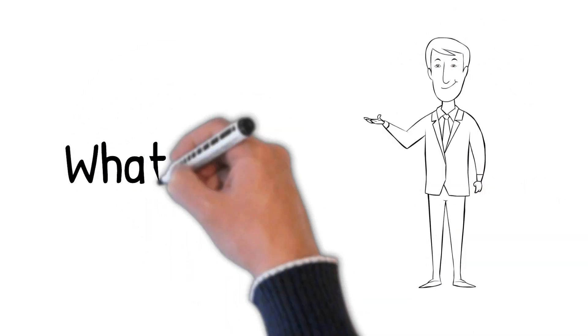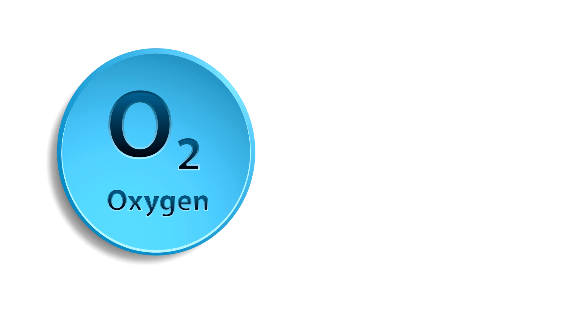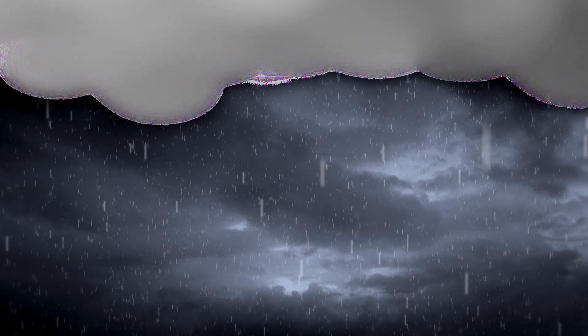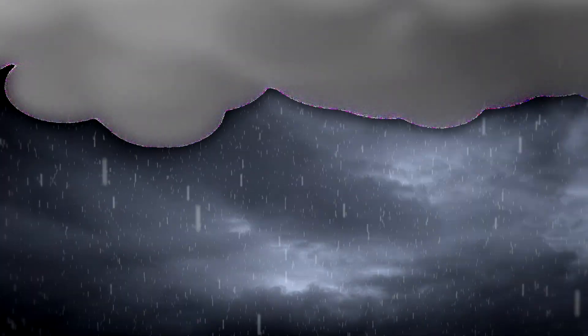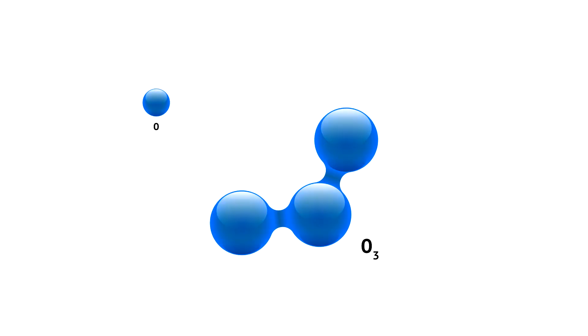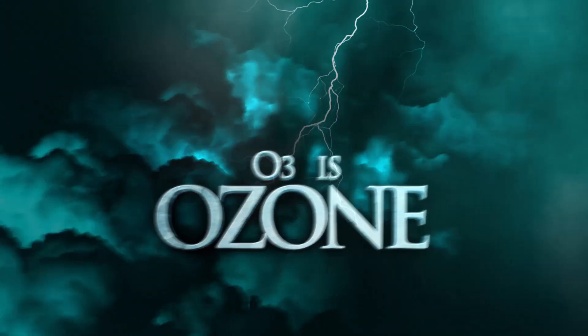What is ozone? O2 is the oxygen that we breathe. When lightning strikes in the upper atmosphere, it splits the O2 in half, making two separate oxygen molecules. These are unstable on their own, so each one joins together with another O2, making O3, which is ozone.